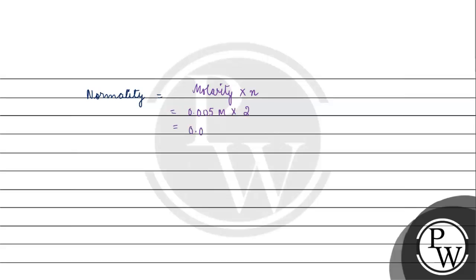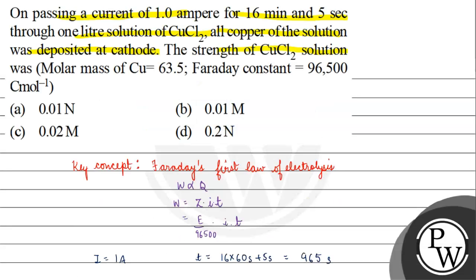We have 0.01 normal normality 0.01 normal. Coming back to the question, correct answer for this question is option A. I hope you understood it well, thank you and all the best.